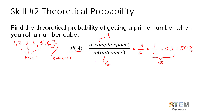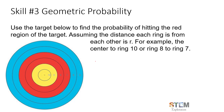Moving on to the last example — a tougher one. We're going to use a target to find the probability of hitting the red region — not the center, not the outside, but the red region. We'll assume you have enough skill to hit the target every time; we're just asking where on the target you'll hit. So if you throw a dart randomly at the target, what is the geometric probability that you'll hit the red region?